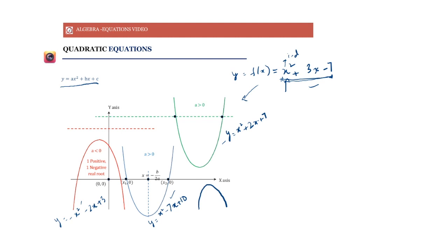Whenever the coefficient of x² is positive, the parabola is upward opening — it keeps going upwards. When the coefficient of x² is negative, like −1, the parabola is downward opening and has a maximum. The two upward-opening parabolas have a minimum.